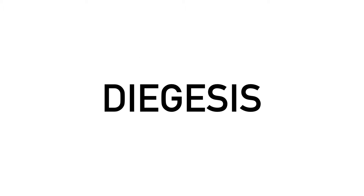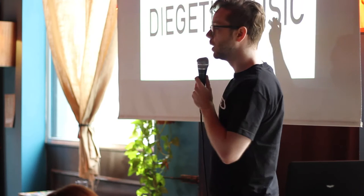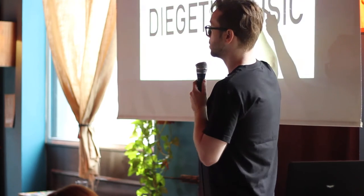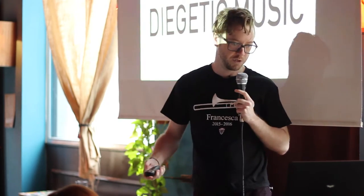So what is diegesis? It comes up in Greek literary criticism and a bit in modern literary criticism, but it's most commonly used in film theory. The best example of how it's used there is in music. Diegetic music is the term we use for music that belongs in the world of the film. If you can see the instruments, if you can see where the music is coming from, then it's diegetic music.